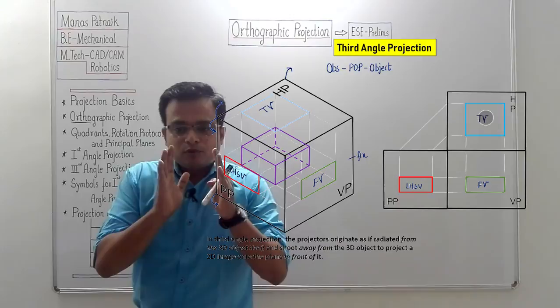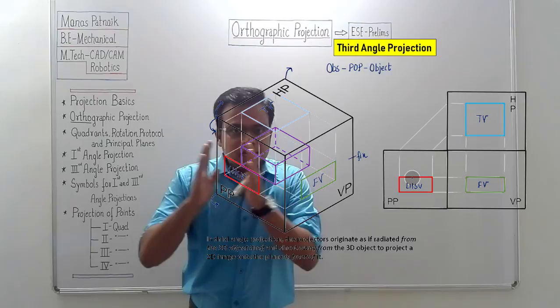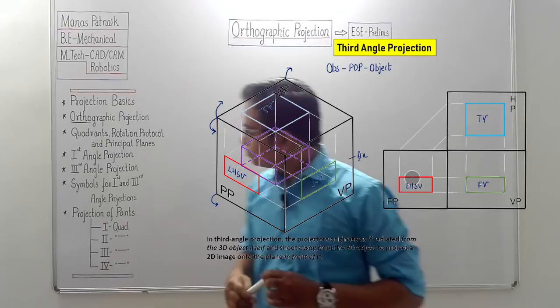Remember this important difference: in first angle projection, the left-hand side view is to the right of the front view; in third angle projection, the left-hand side view is to the left of the front view.